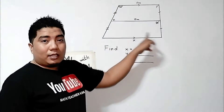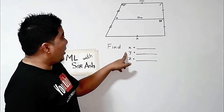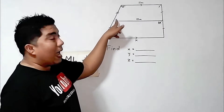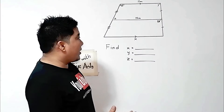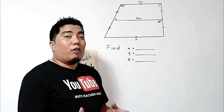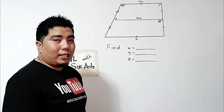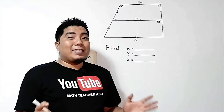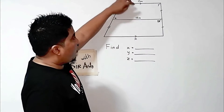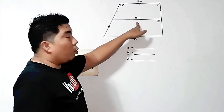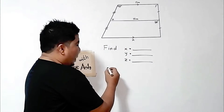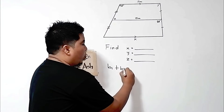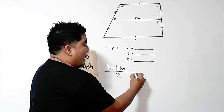The x here is the base two of this trapezoid. The y here is a base angle. And z here is another angle in the median. Now let's start first with x, which is the length of one of the bases. Remember, the midline segment theorem states that if you add the first base and the second base, divide it by 2, you will get your median. So, to solve for x, we need: base 1 plus base 2 over 2 equals the median.